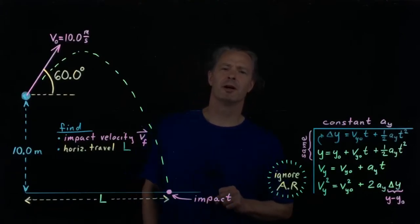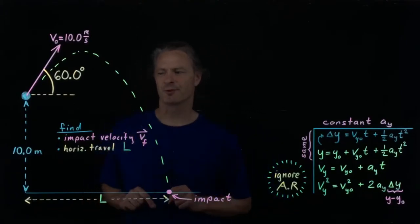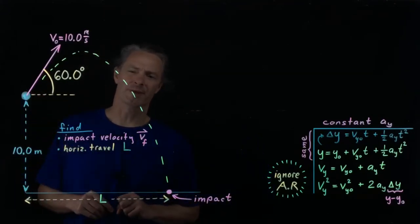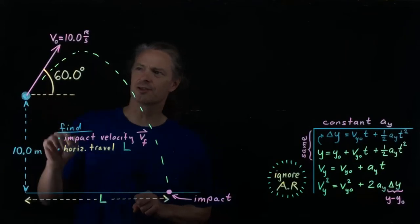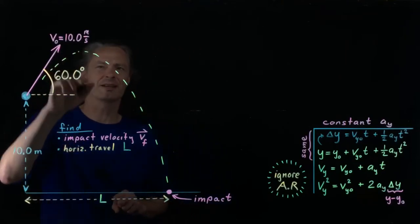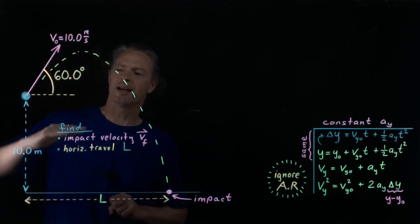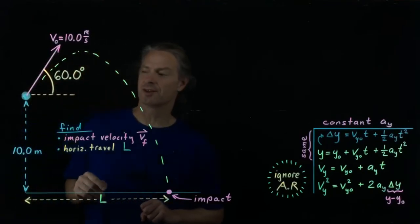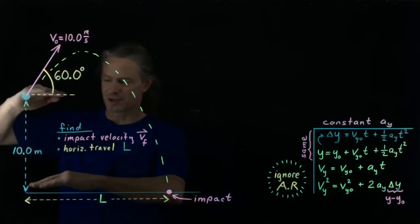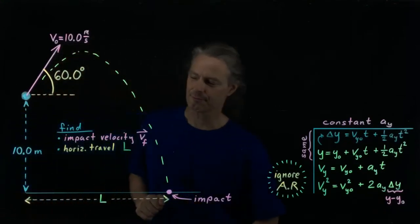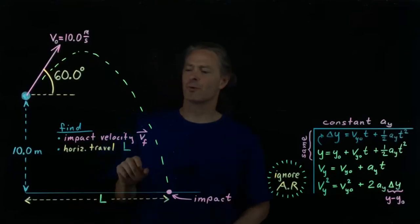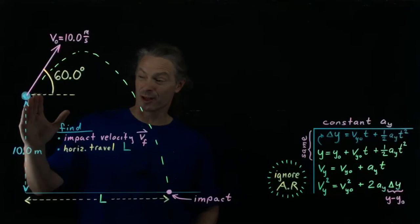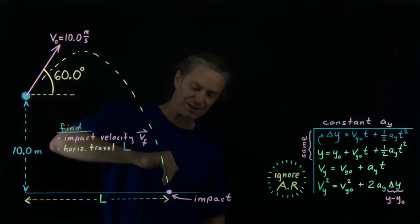Hi everybody. In this video, I'm going to work through an idealized projectile motion problem in which we have a projectile — possibly a baseball, softball, or a stone — that at the instant shown has a velocity of magnitude 10 meters per second and a direction of 60 degrees above the horizontal. Imagine at this instant the projectile is 10 meters above the level ground. Given this information, we're asked to figure out the impact velocity — that is, what is the velocity of this projectile as it hits the ground?